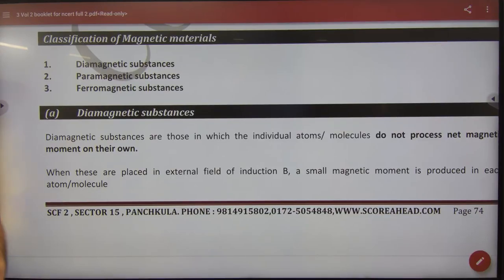Classification of Magnetic Materials. Magnetic materials are classified into three types of materials. First, Diamagnetic. Second, Paramagnetic. Third, Ferromagnetic.